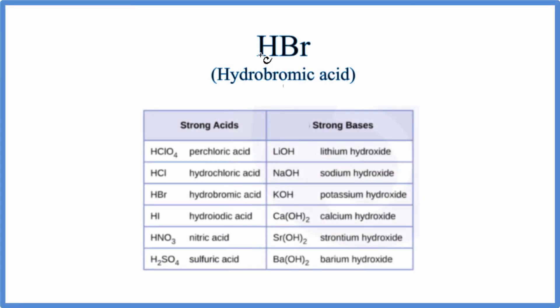In this video we'll look at whether HBr is a strong or weak acid. This is hydrobromic acid. First off, we have this hydrogen in the front of the compound, which is a good indication that this will be an acid.